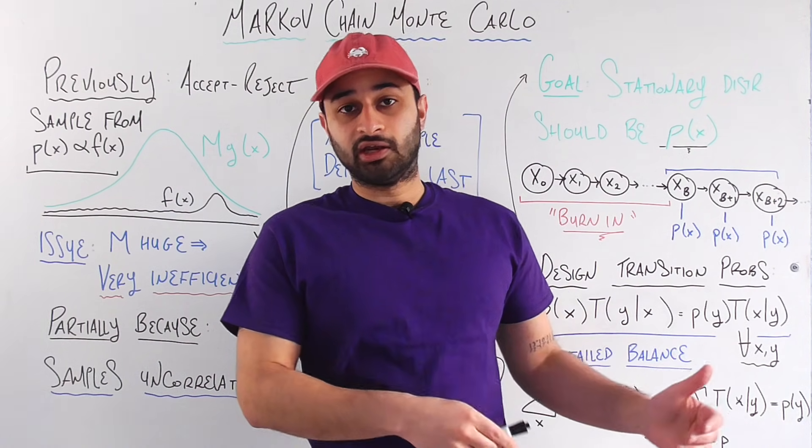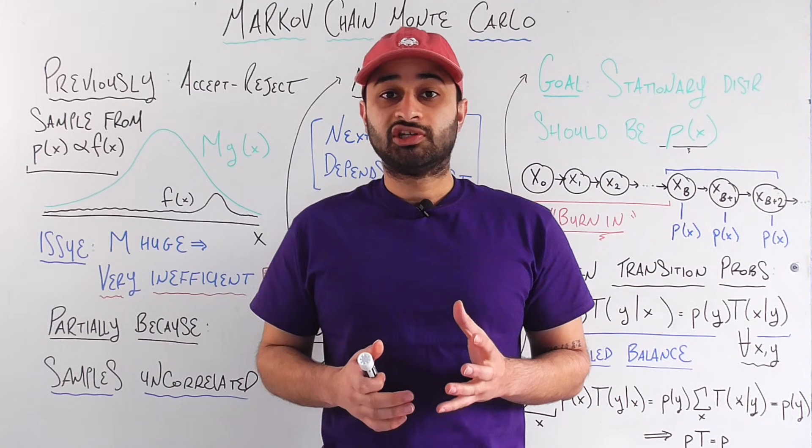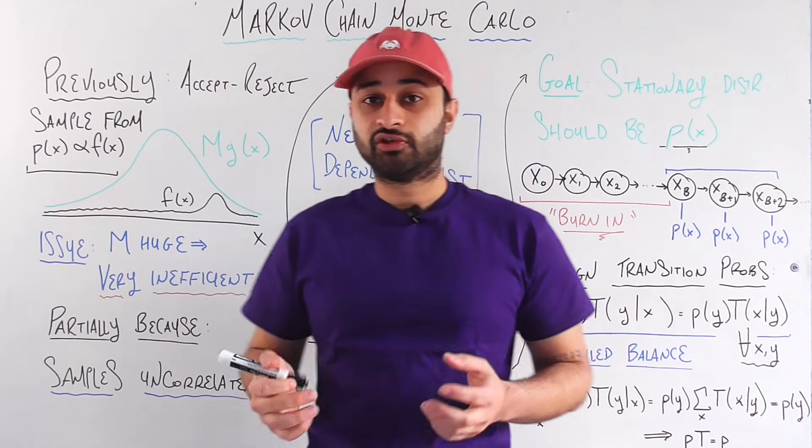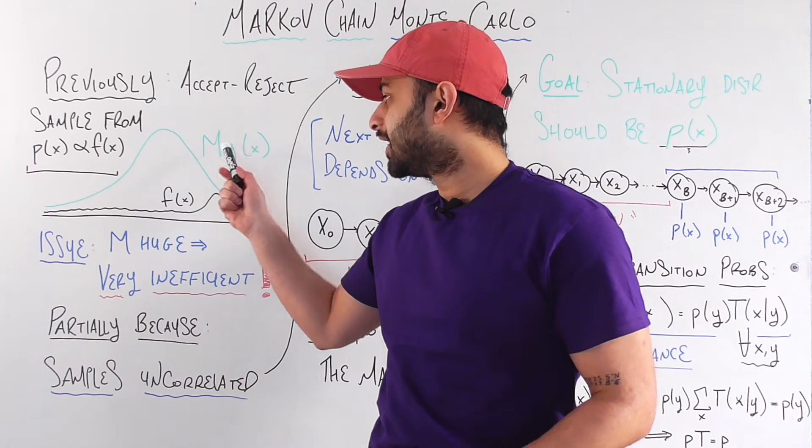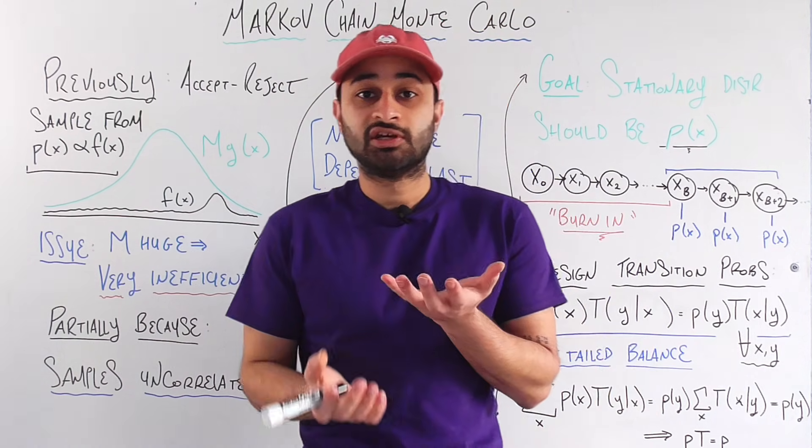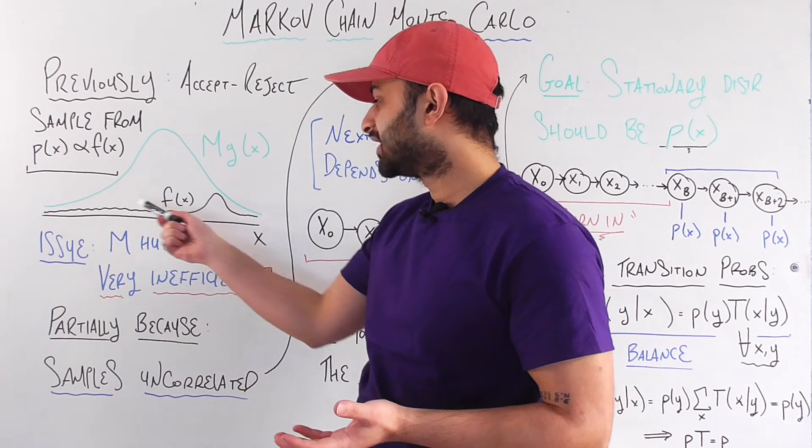And in that video, the last thing we said was the biggest disadvantage is choosing g because we need g to be simple but we also need to make sure that this m is big enough so that when we scale g up, so g here is the normal distribution and mg of x which is the green line is the normal distribution scaled up so much enough that it's above this f of x always.